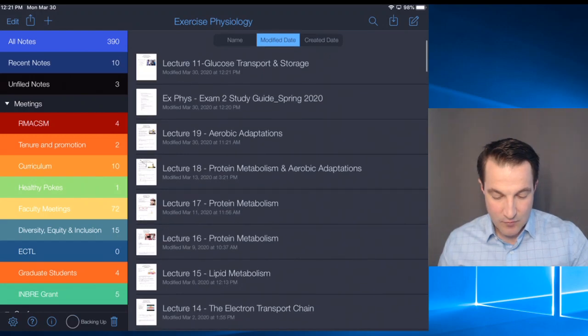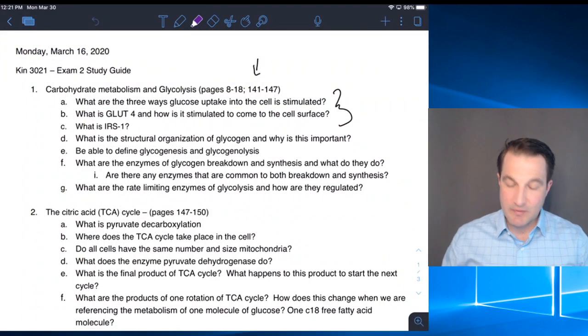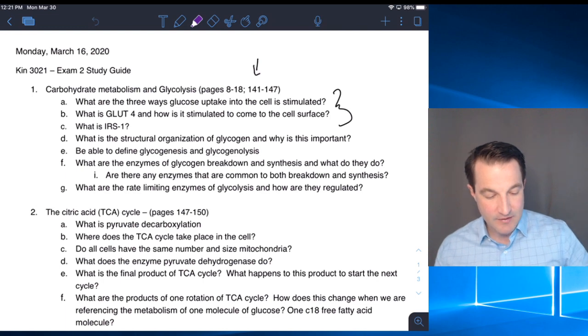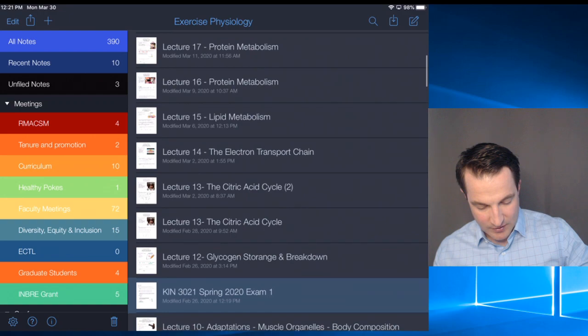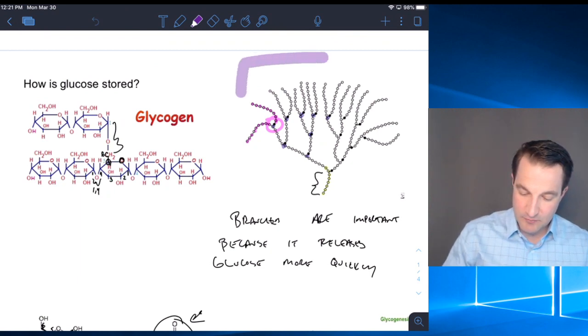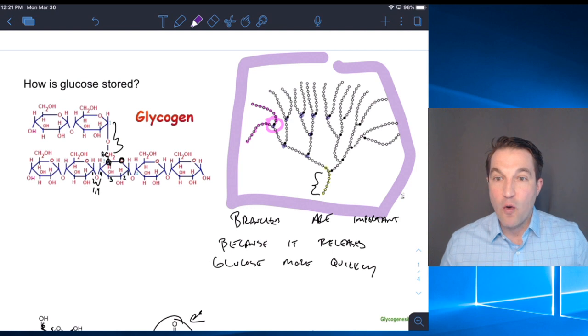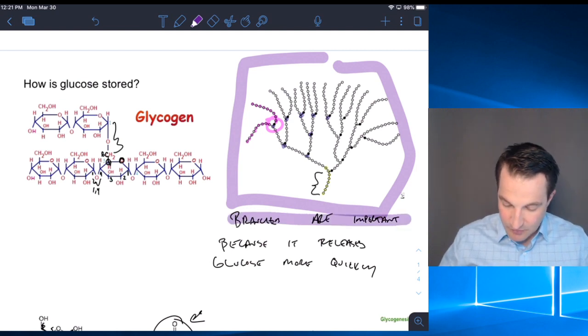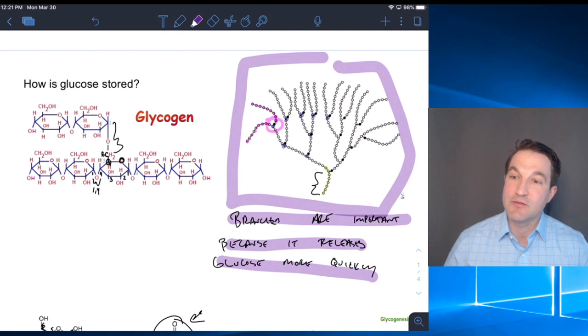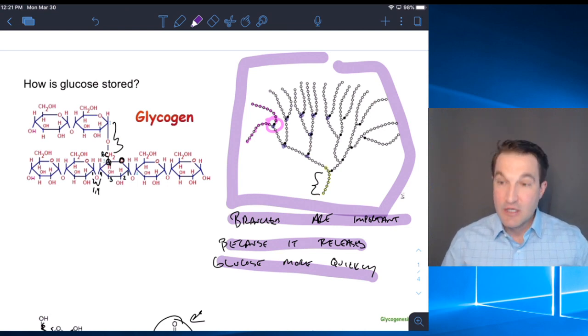Then after IRS-1 and GLUT4, we move to structural organization of glycogen. The main thing is talking about this branched structure of glycogen. Why is that important? Because the branches are important because it releases glucose more quickly. Remember we did the exercise in class when we had different people break off from the end of our chain. As we created more branches, more people were able to move at one time. That's the important part about glycogen branching.